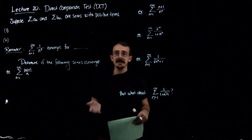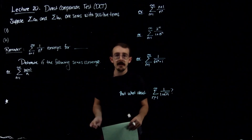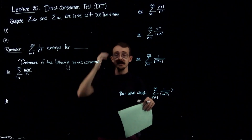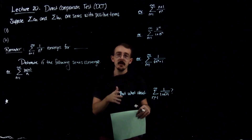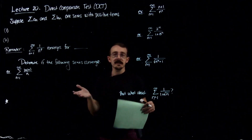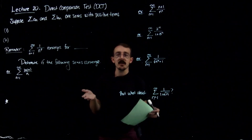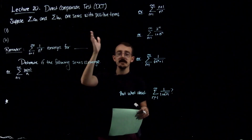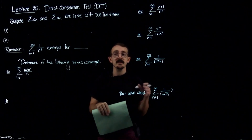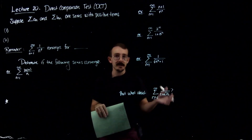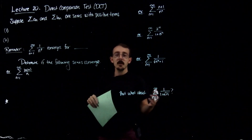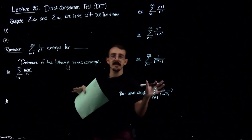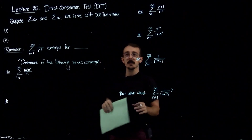Welcome to lecture 20. This brings us to the Direct Comparison Test, which is yet another test for showing series convergence. Lectures 20 and 21 are very similar in that the two tests are related to each other. Lecture 20 is the Direct Comparison Test and lecture 21 is the Limit Comparison Test. They work with similar types of series, which is why these two go together.